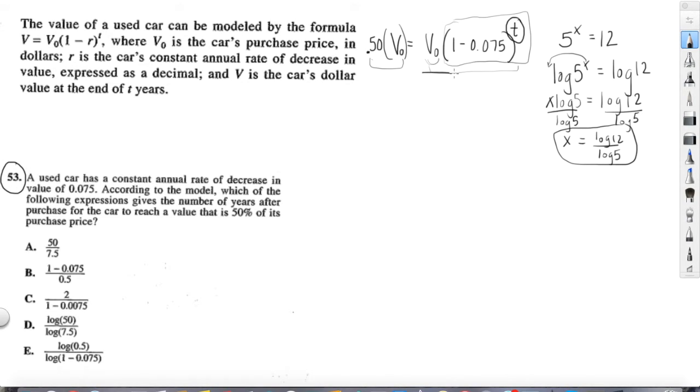So divide both sides by V sub 0 or V0 to get this piece, 1 minus 0.75 quantity raised to T, by itself so we can do this log rule. Alright, so when we divide this, of course, we have the same thing on the top and bottom. We can cancel those out. So what we're left with is 0.5 equals our stuff in here raised to the T. And that stuff, of course, is 1 minus 0.075.